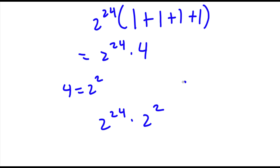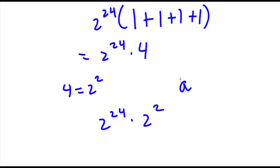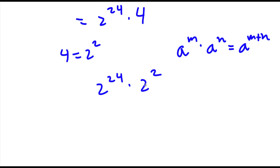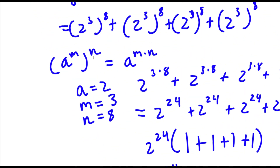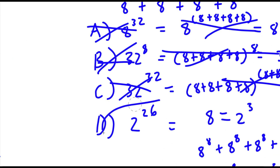Now if I have something in the form a to the power of m times a to the power of n, this is the same thing as a to the power of m plus n. So 2 to the power of 24 times 2 squared would be 2 to the power of 24 plus 2, which is equal to 2 to the power of 26. So this is why our right answer is D.